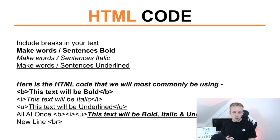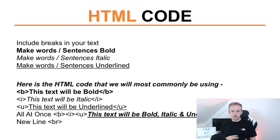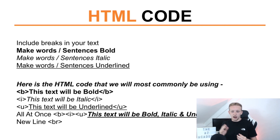The HTML code for these formatting options is shown on screen. To make text bold, you use an angled bracket, the letter B, and a closing angled bracket before your text, then end it with the same thing but with a forward slash before the B. That ends the bold — after that you can write as normal. It works the same for italic (I) and underline (U). For a line break, you use an angled bracket, BR, and a closing angled bracket — that's the only one that doesn't use a closing slash tag.